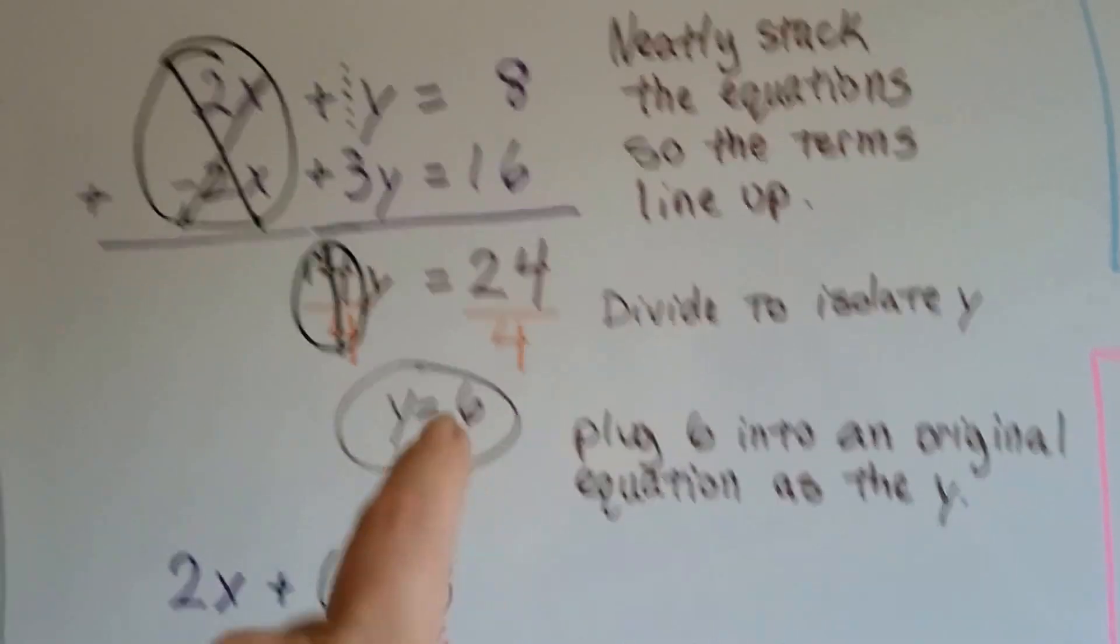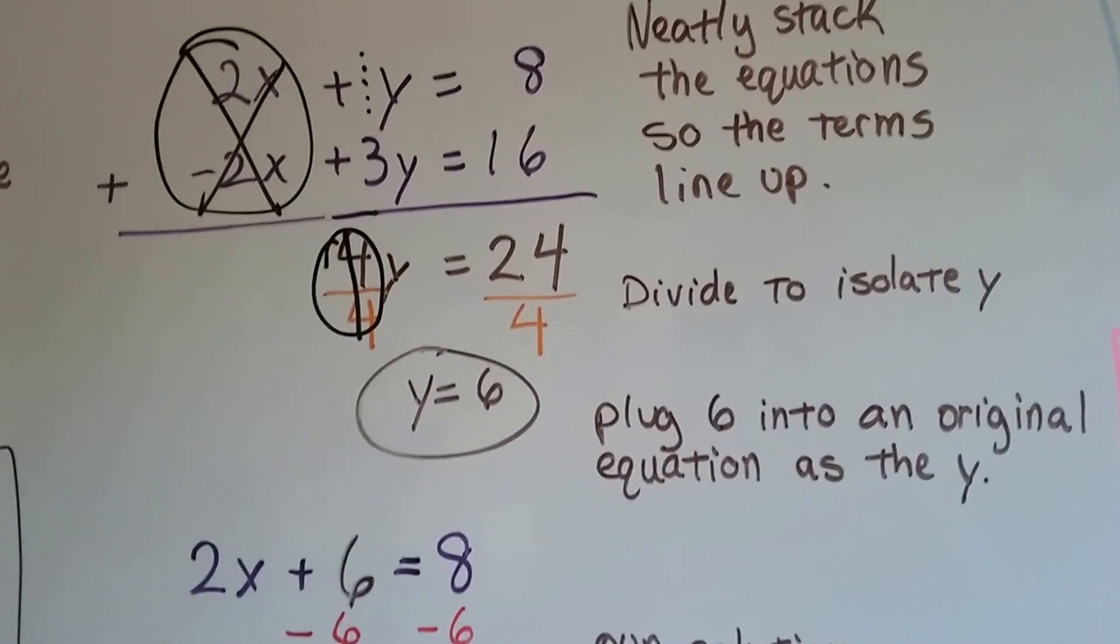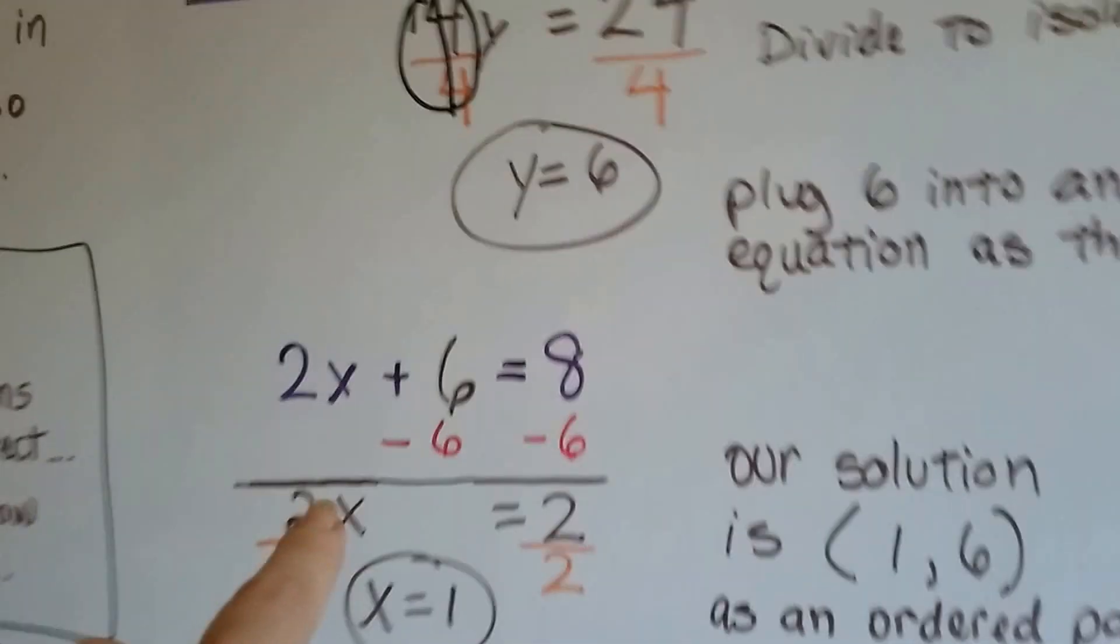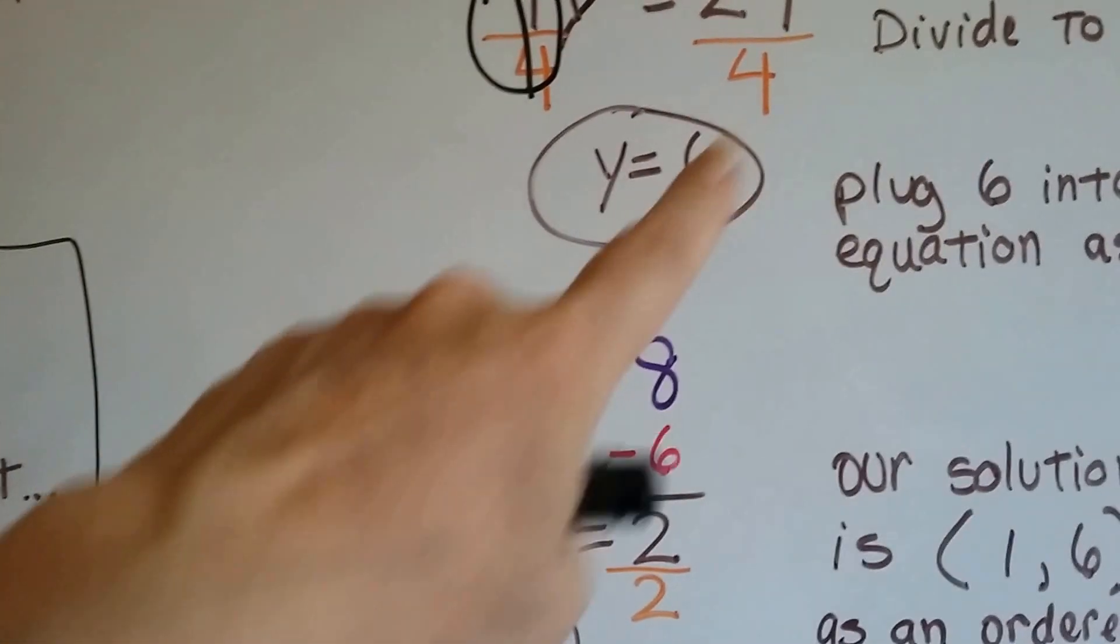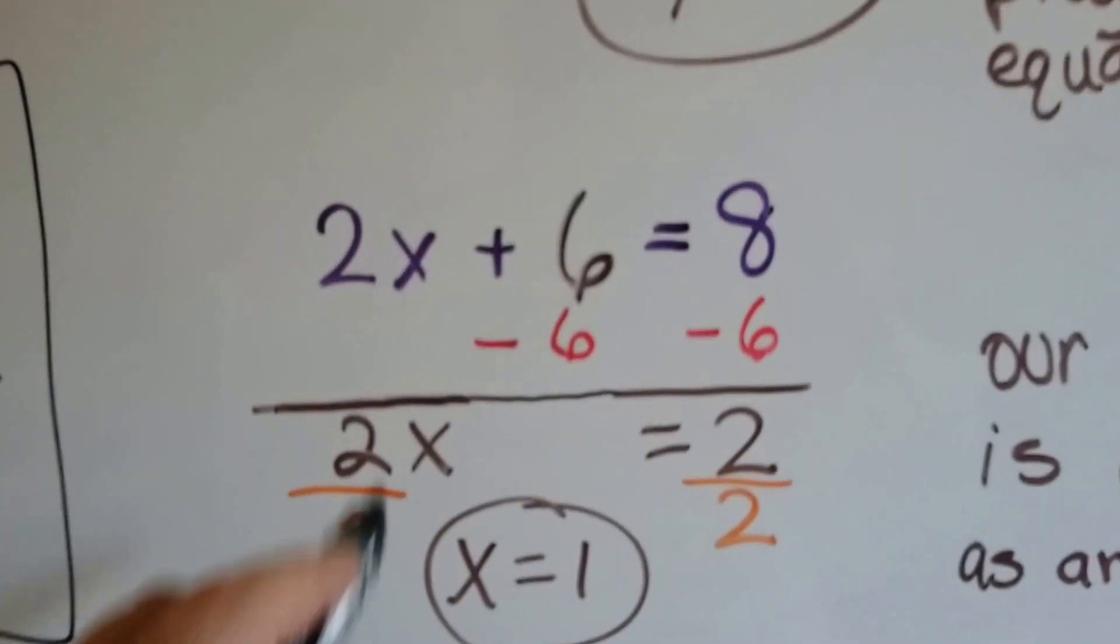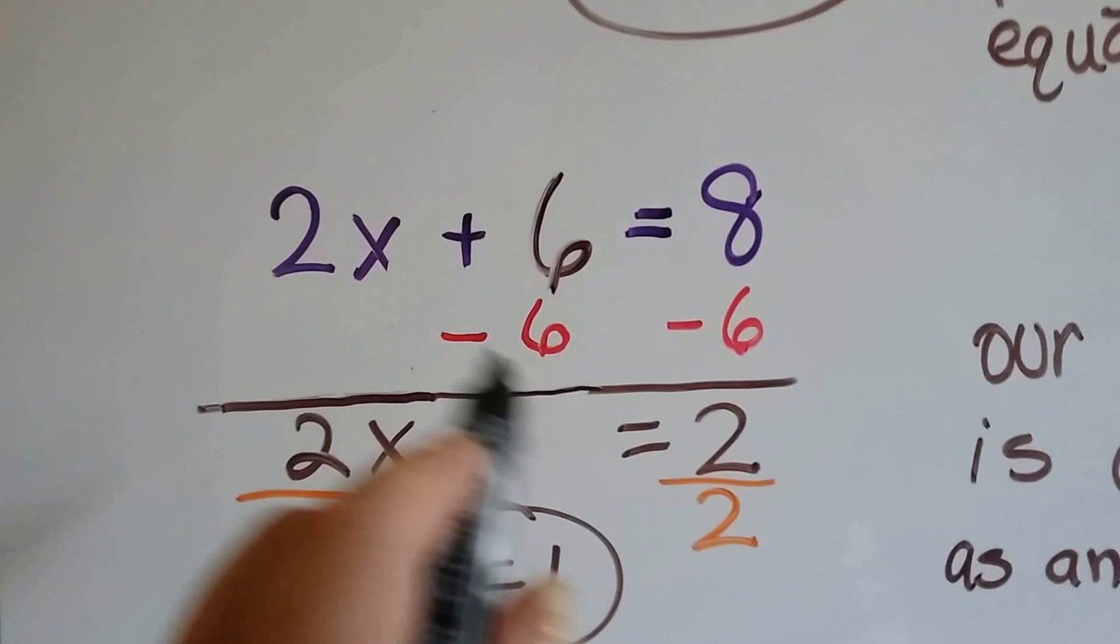We can plug 6 into an original equation as the y. So I choose the top one, 2x plus y equals 8. So now it's going to be 2x plus 6 equals 8, because we substituted it in.